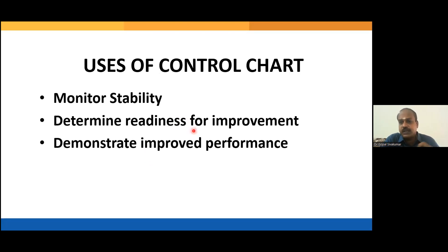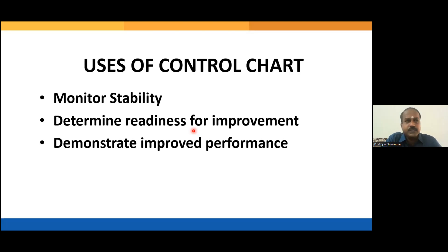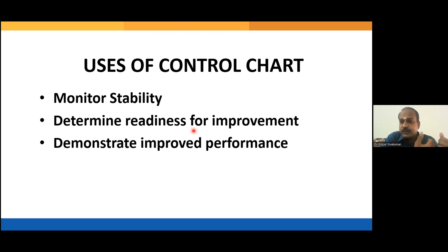Number two, a control chart helps you understand the readiness for improvement — whether your process is ready for the next level of performance. If all the points are inside the control limit, the process is ready for improvement. If points are not falling inside the control limit, the process is out of your control. It's like teaching students — you need control over your students first before you think of improving your lectures.